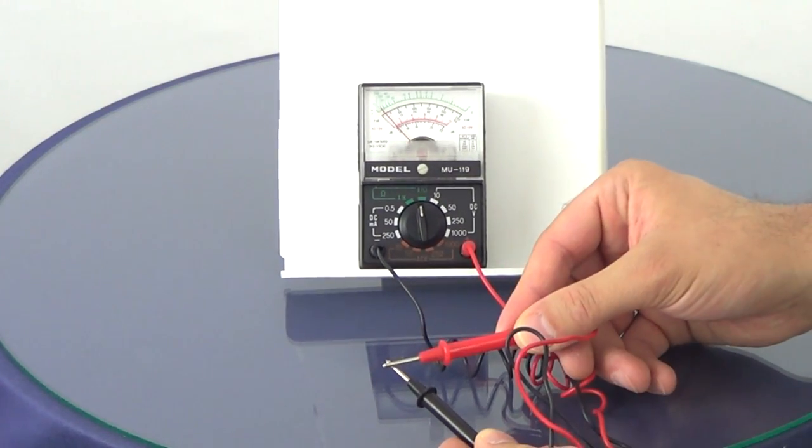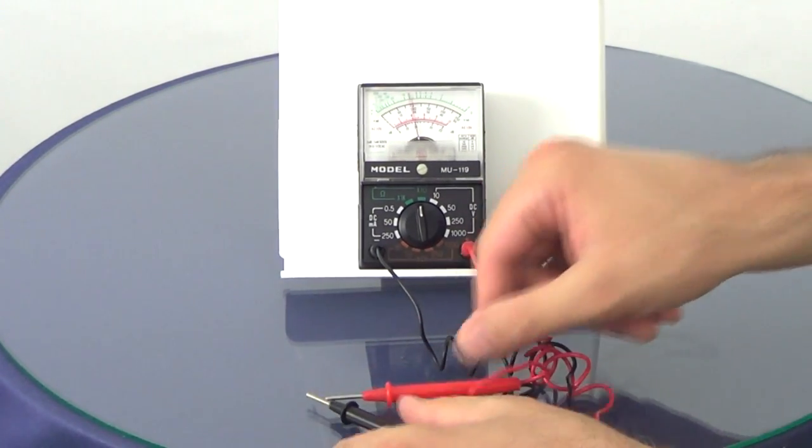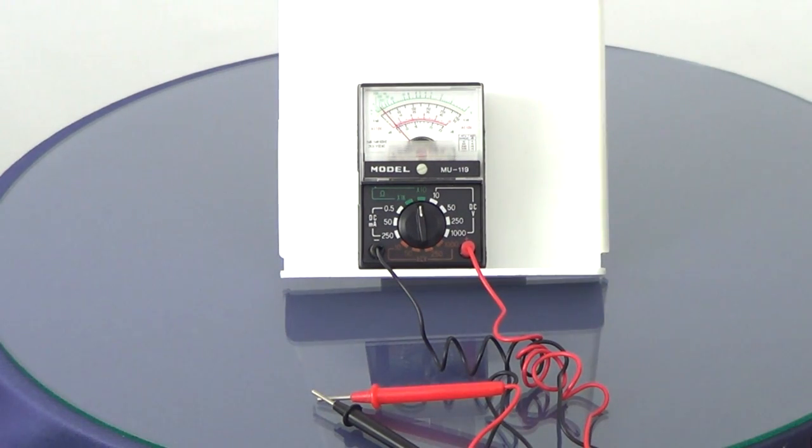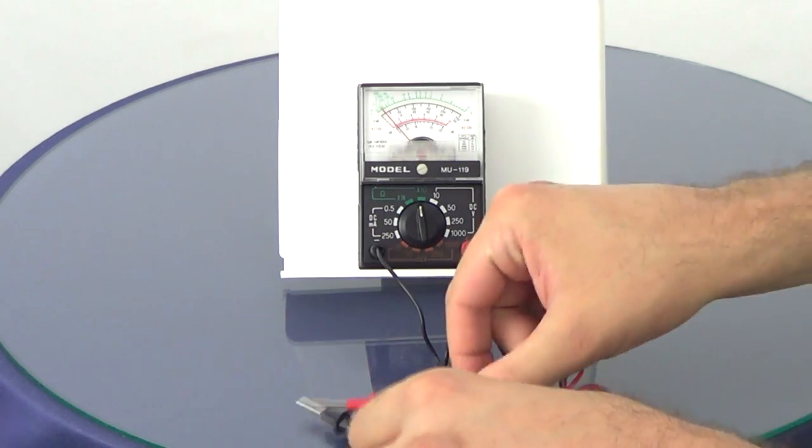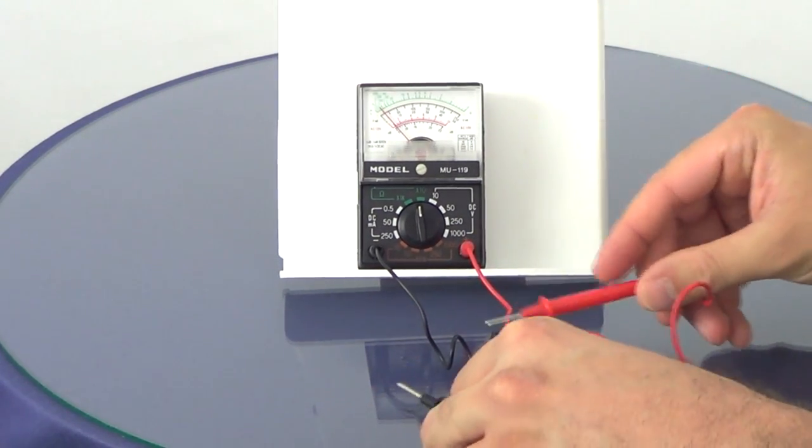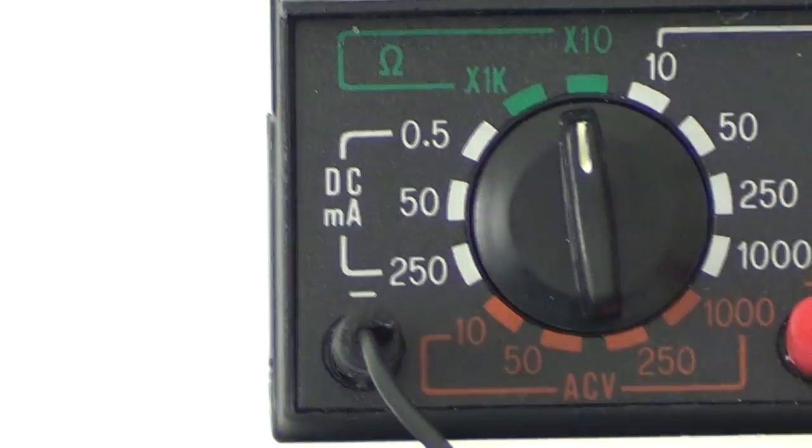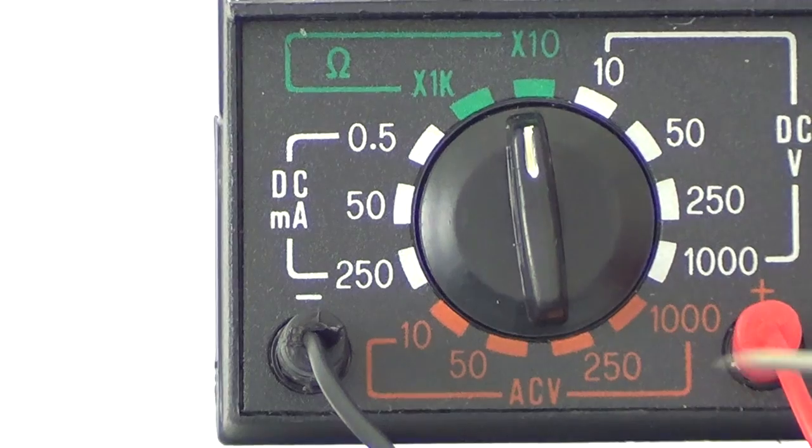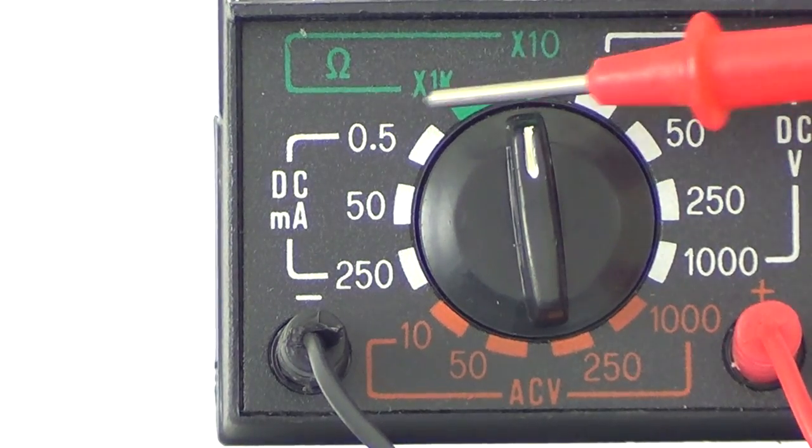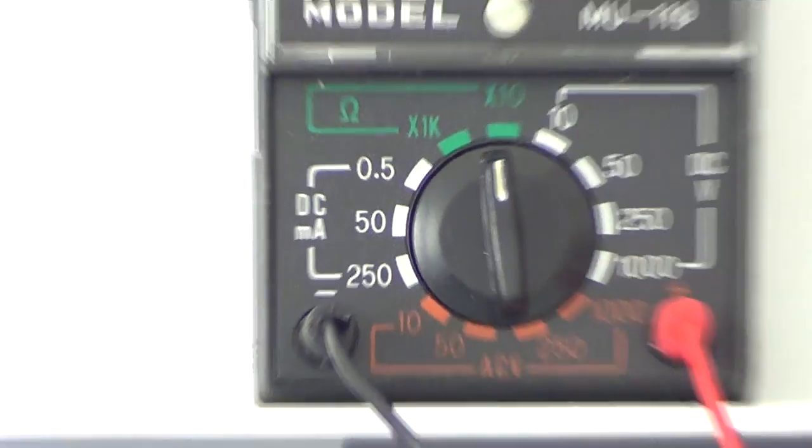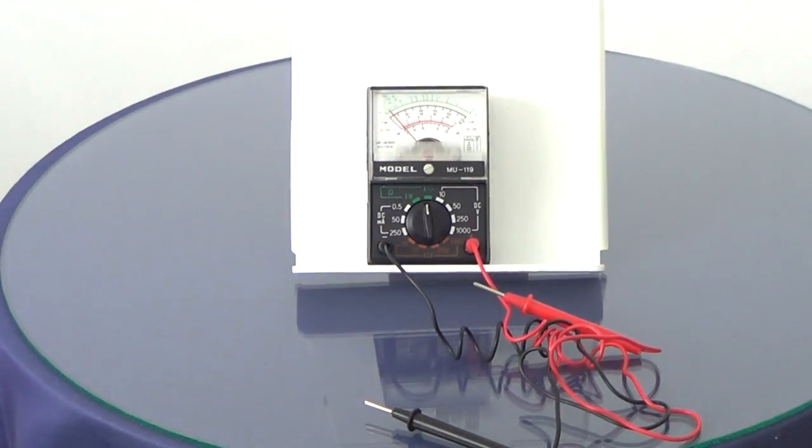Now if you have one of these meters and you touch these together and it does not go all the way to the right, before you decide it's a bad meter check the battery and make sure these leads are plugged in well. When you're checking continuity you want to set this dial on the section that has that little emblem right there and what that is is ohms and it's checking resistance or the ability of electricity to pass through a route.